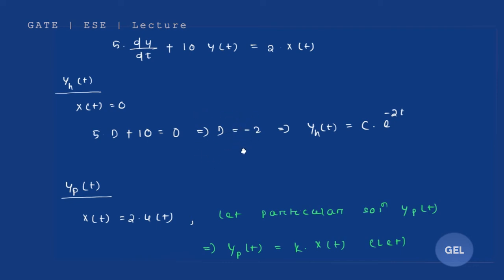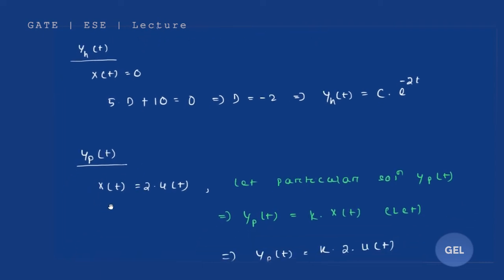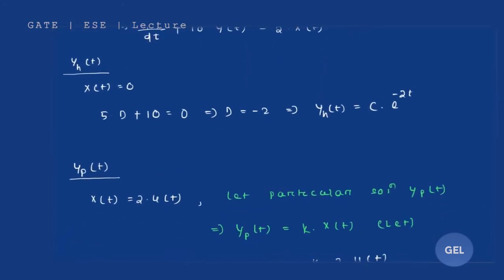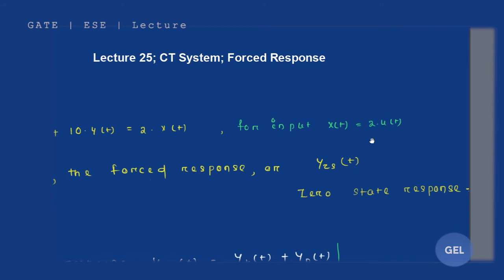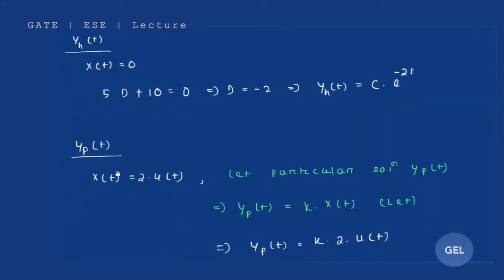For the particular solution, we consider the input value. The homogeneous solution is the solution when input is zero; the particular solution is the solution when input has some specific value. Here the input x(t) = 2·u(t) is given. Let the particular solution y_p(t) be our assumption.